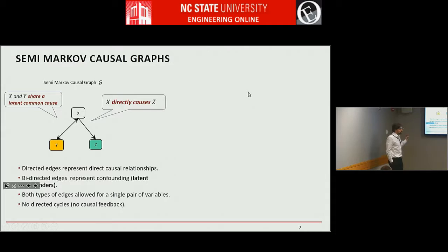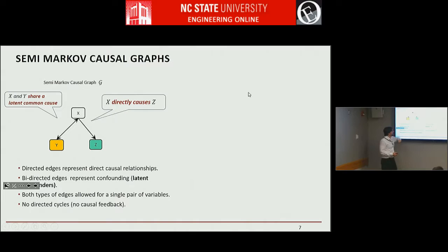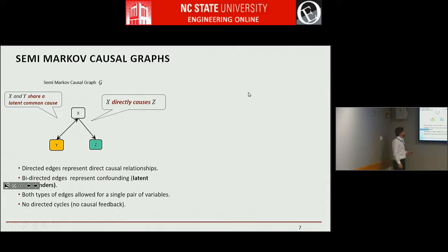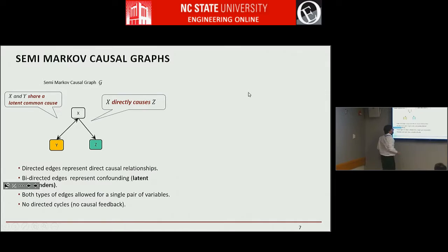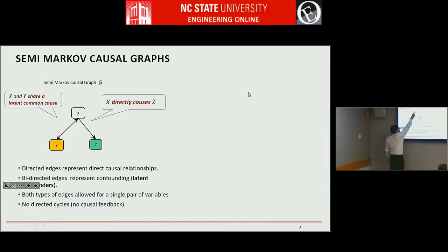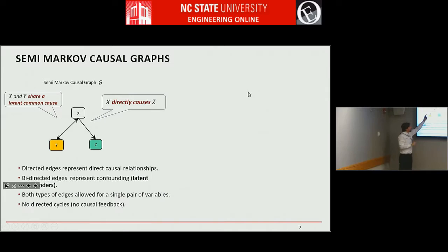We use a set of models called semi-Markov causal models. They have graphs where variables are represented as vertices and nodes. The directed edges correspond to direct causality where nothing among the observables mediates this causation. The bi-directed edges correspond to the presence of a latent confounding factor that we don't measure, which causes both of these variables. With bi-directed edges, we denote the fact that neither Y causes X nor vice versa, but there's a third missing variable that causes both.